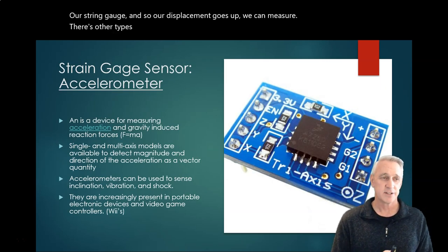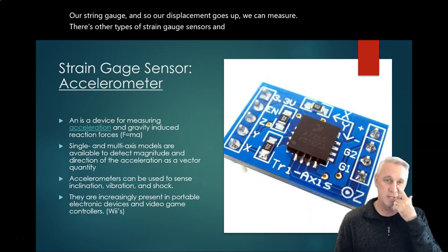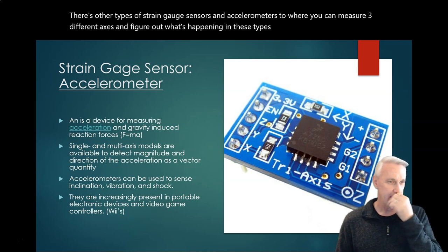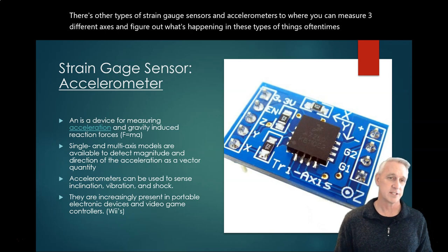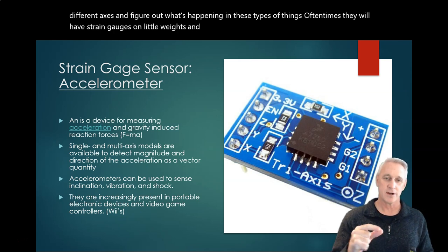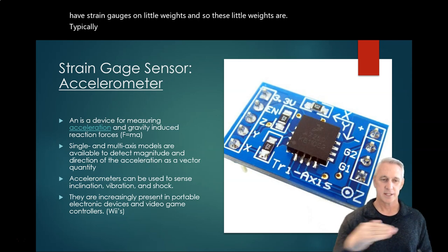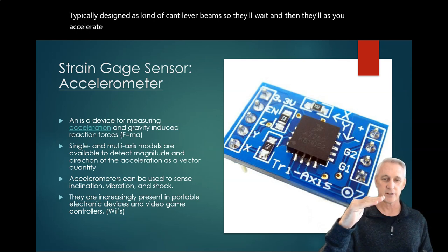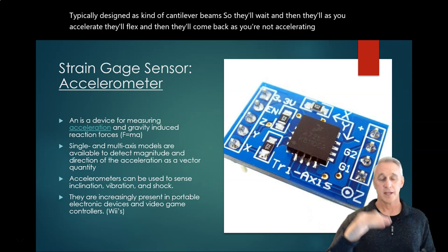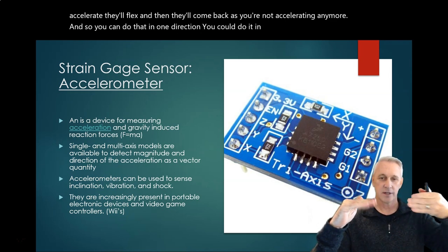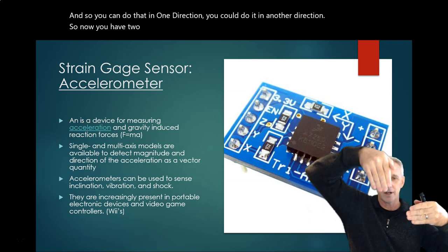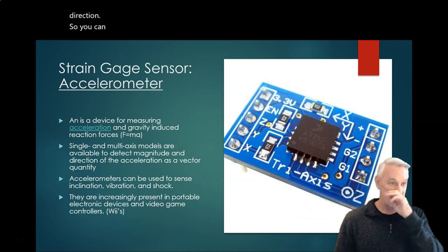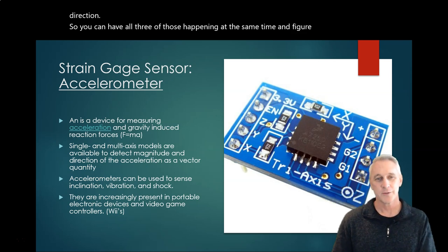There's other types of strain gauge sensors and accelerometers where you can measure three different axes and figure out what's happening. Oftentimes they will have strain gauges on little weights. And so these little weights are typically designed as kind of cantilever beams. So they'll weight and then as you accelerate, they'll flex and then they'll come back as you're not accelerating anymore. And so you can do that in one direction, you could do it in another direction. So now you have two axes, and you do it trying to figure out the right direction, the other direction.